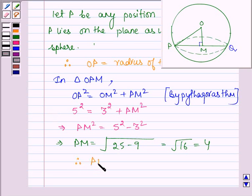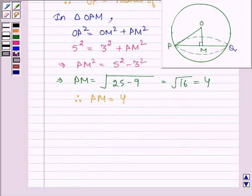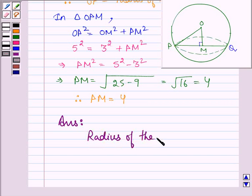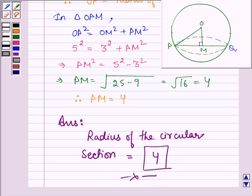Therefore PM is equal to 4, and this is the radius of the circular section. Hence our answer is: radius of the circular section is equal to 4. So this completes the session. Bye and take care.